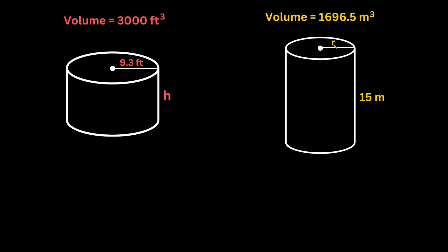So for this last one, it gives us the volume, 1696.5 meters cubed. Here we're looking for the radius, but this time it does give us the height. So again, we're going to want to use the same formula to find the volume of a cylinder. So that's the volume is equal to pi r squared times h.